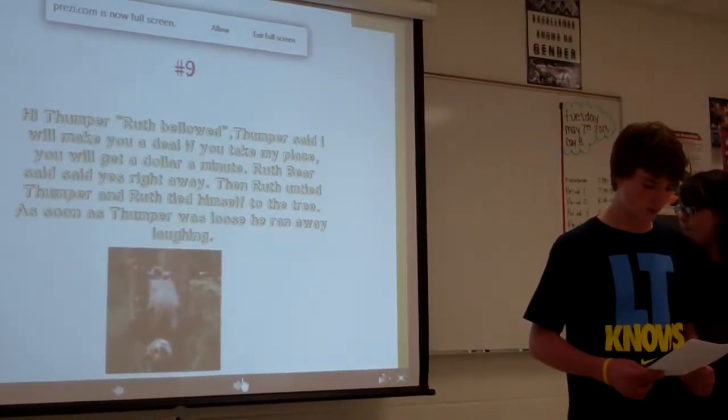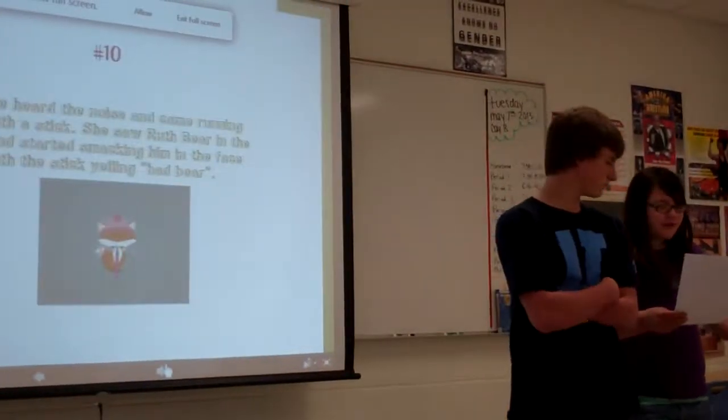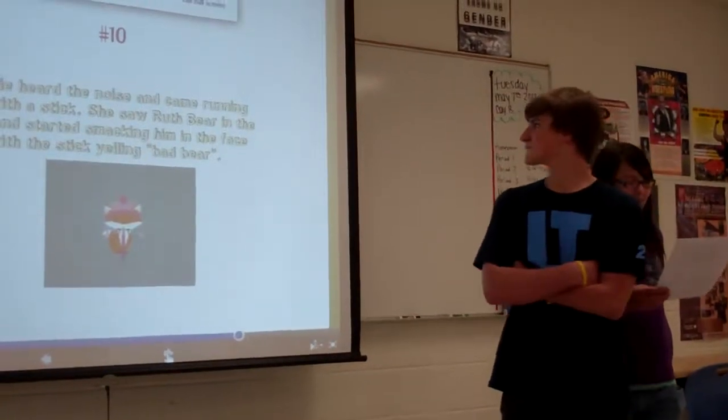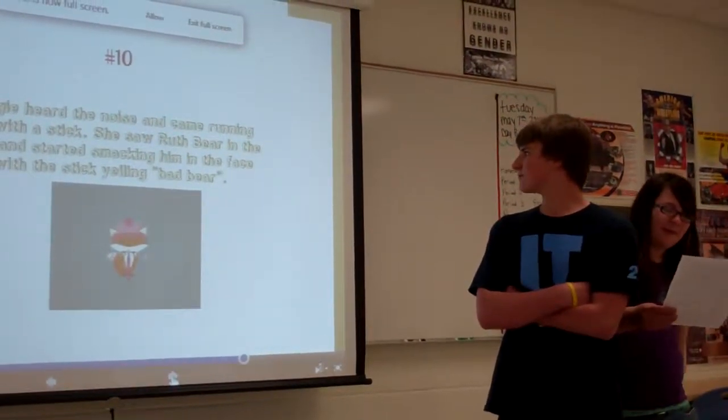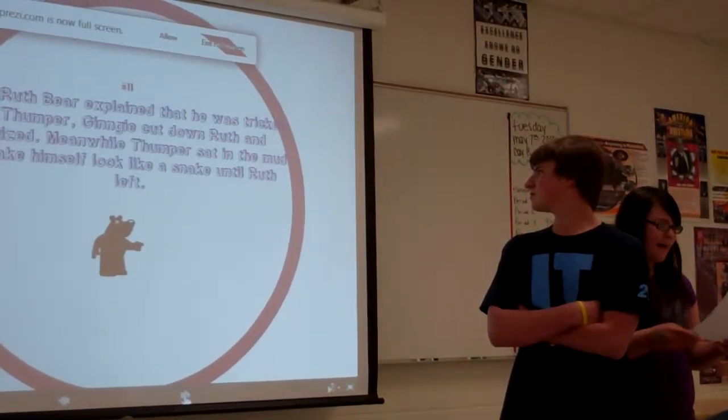As soon as Thumper was loose, he ran away laughing. Gingy heard a noise and came running back with a stick. She saw Ruth there and started smacking him in the face with the stick, yelling bad man. When Ruth explained that he was tricked by Thumper, Gingy cut down Ruth and apologized.